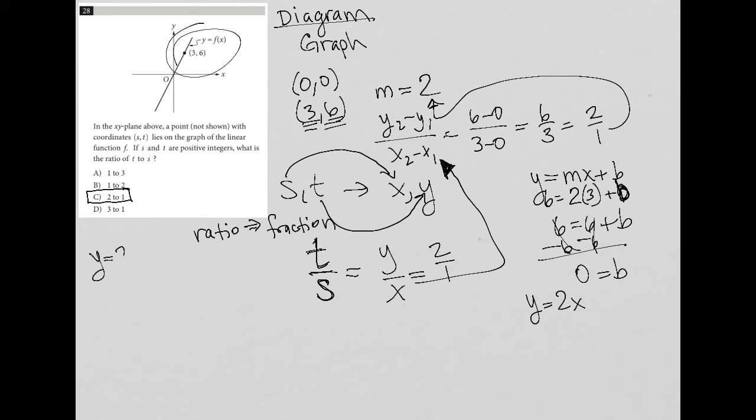Now if y equals 2x, and we know we're dealing with points only in the first quadrant, what happens when x equals 1? Well when x equals 1, y equals 2. And yeah, t over s would equal 2 over 1, because t is the same as y and s is the same as x.